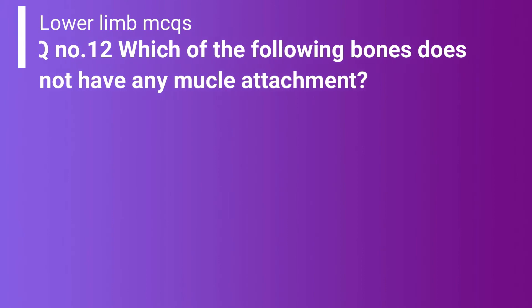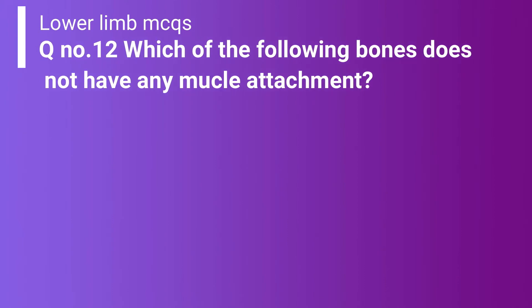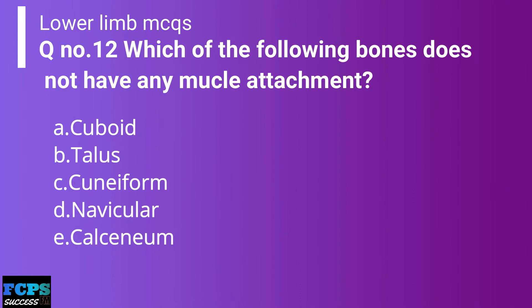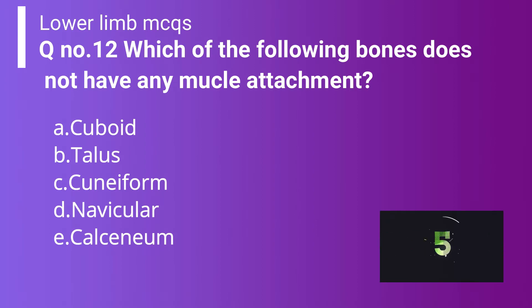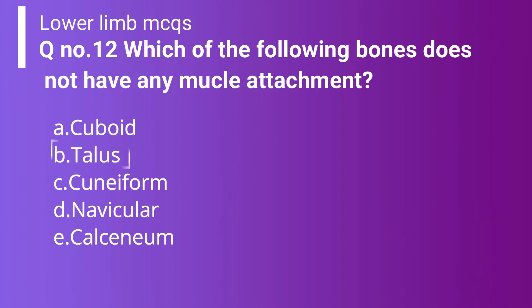Question 12: Which of the following bones does not have any muscle attachment? Option A: Cuboid. Option B: Talus. Option C: Cuneiform. Option D: Navicular. Option E: Calcaneum. The correct answer is Option B — talus — because it does not have any muscular attachment, as shown in the figure.